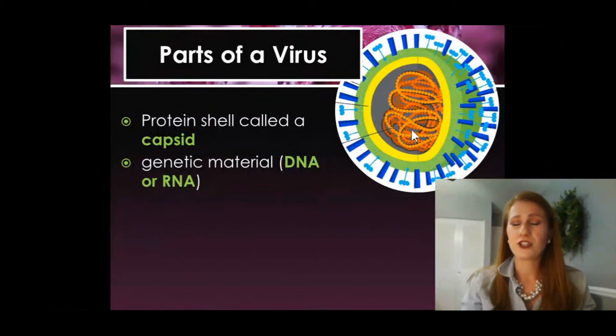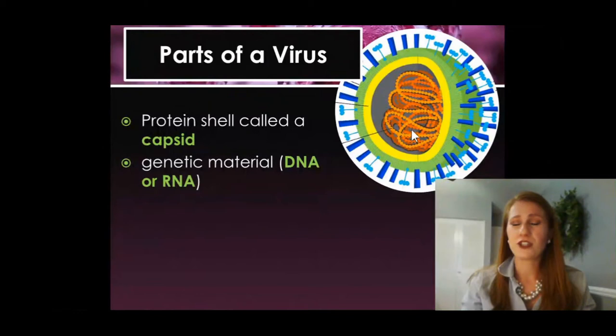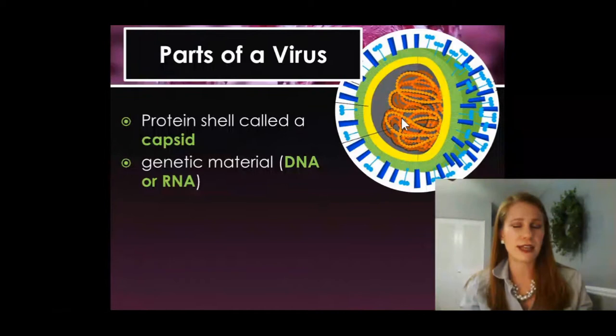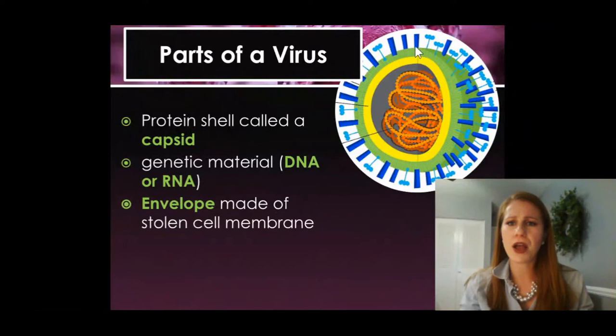It's DNA or RNA. So viruses do have genetic material, which is why a lot of people tend to think that they're just like our cells. But they're not. They don't act in the same way. They just have some structures that might look similar. In addition, they have an envelope, this green part on the outside here, made of stolen cell membrane. And we're going to talk about that in a little bit.